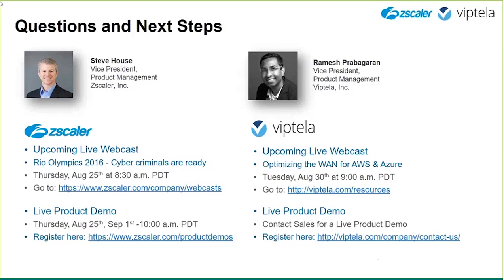Next question for Steve: will the Zscaler-Viptela solution work if the customer wants to use MPLS and broadband as the overlay network? Absolutely — from a Zscaler perspective, that's transparent. The traffic destined for the public Internet goes through the Zscaler service for SaaS applications and public websites. Viptela can absolutely work with MPLS and broadband simultaneously, as part of either a transition or a strategy to reduce costs and improve performance.